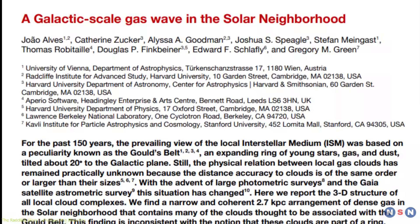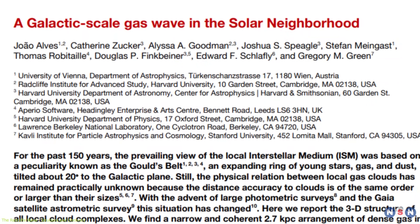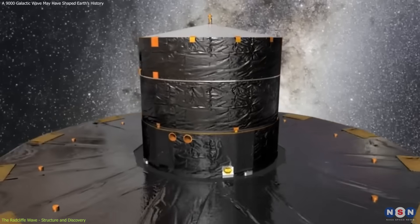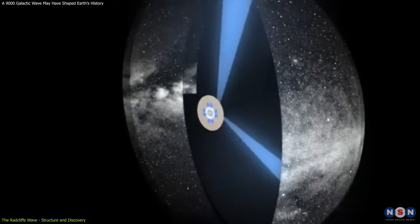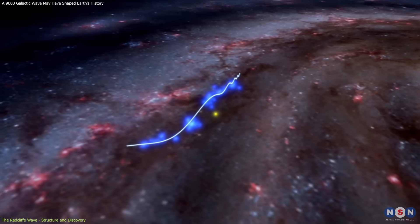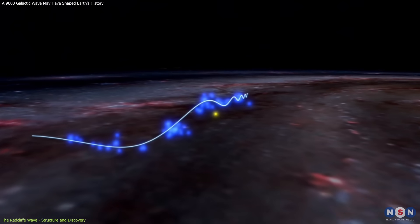The discovery of the Radcliffe Wave was announced in January 2020 by a team of astronomers using data from the European Space Agency's Gaia mission. Gaia's precise mapping of stellar positions and motions allowed researchers to construct an unprecedented three-dimensional model of interstellar matter, revealing this massive gas structure.